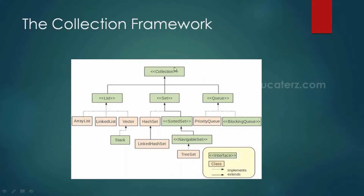The collection framework starts with the Collection interface, under which we have three sub-interfaces: List, Set, and Queue. Under List we have classes like ArrayList, LinkedList, and Vector. Under Set we have HashSet, LinkedHashSet, and SortedSet — which is an interface — with TreeSet as a class under it. Green represents interfaces and the other color represents classes. Dotted lines mean 'implements' and solid lines mean 'extends'.